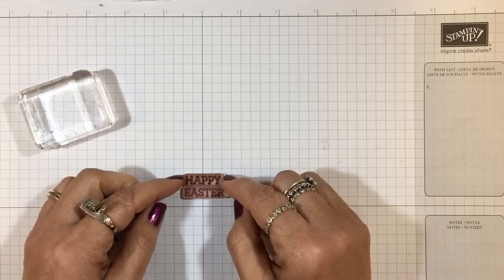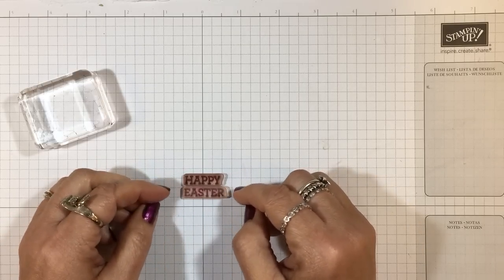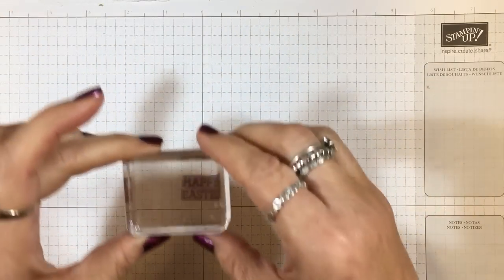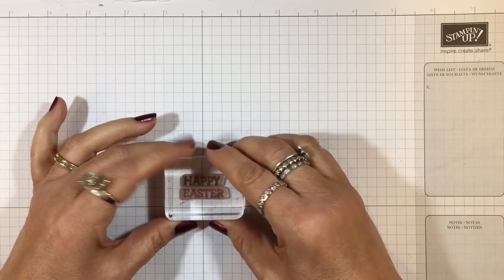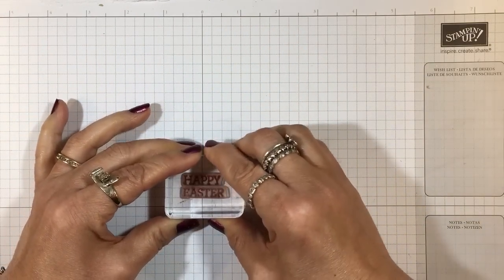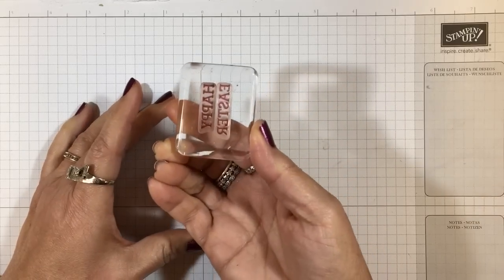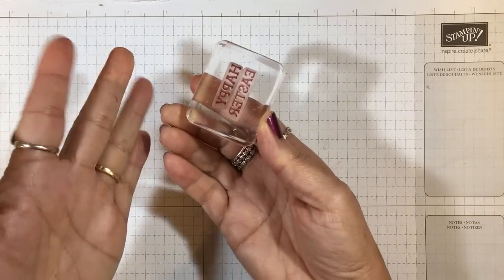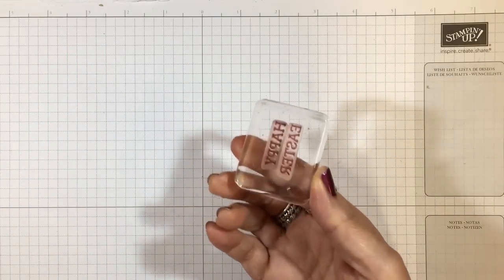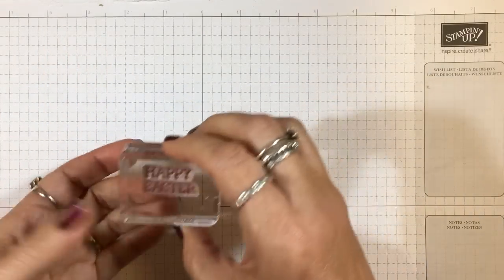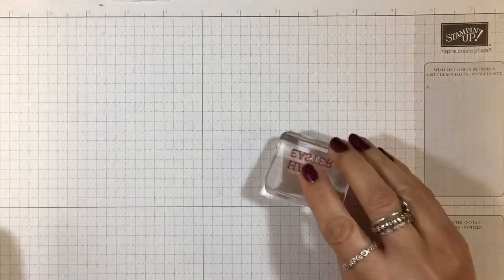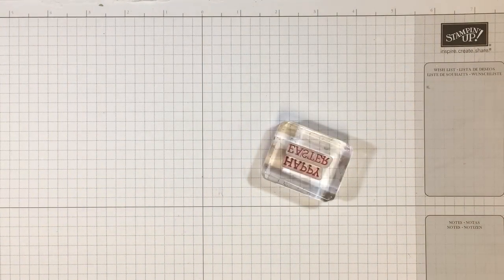and pick it up. Then my stamp is ready to go. I know that it's all straight and going to be nice and neat when I stamp it on a piece of cardstock. So let me just take a scrap piece here and show you. I've got some Melon Mambo ink, let's just ink this up and